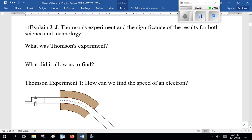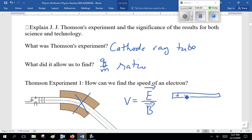Now, this let us calculate the mass of individual ions. Really quite neat. Now, moving on. Explain JJ Thompson's experiment and the significance of the results for science and technology. Well, he did his cathode ray tube. And that allows us to find the charge and mass ratio.